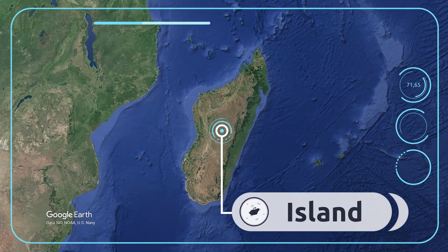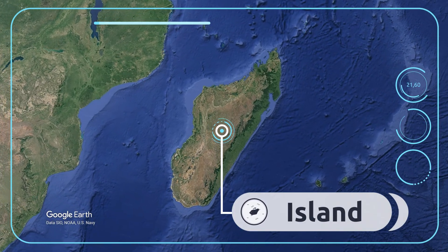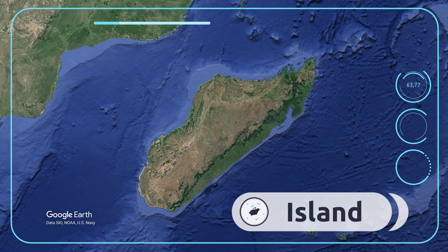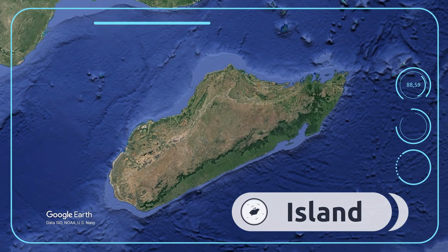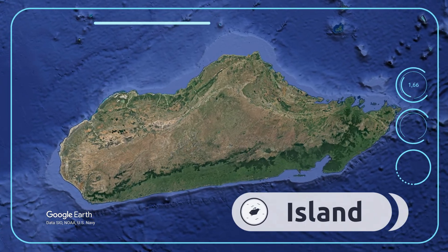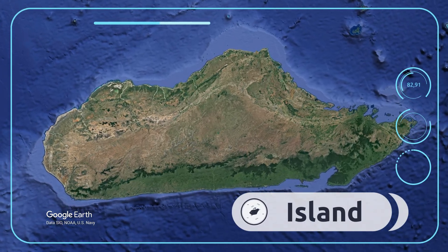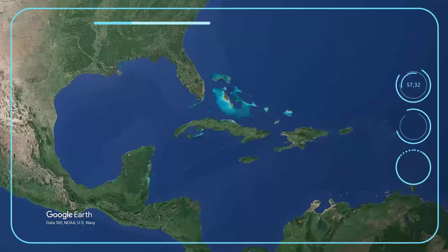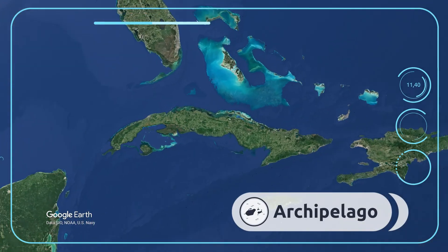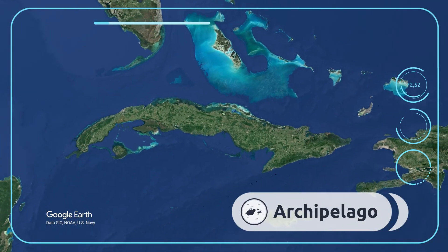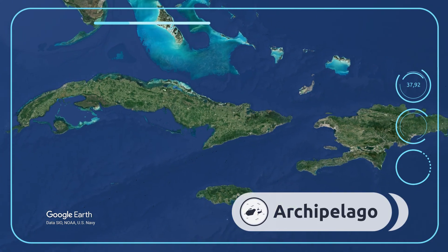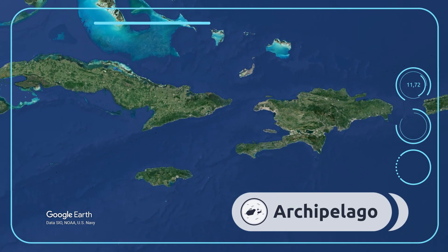An island is a tract of land surrounded by water. Look, right there — it's the island of Madagascar in Africa. An archipelago is a group of many closely scattered islands. For example, the Caribbean Archipelago between North and South America.